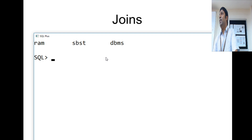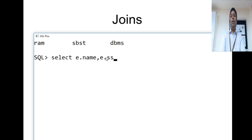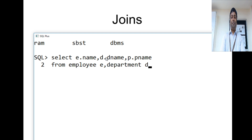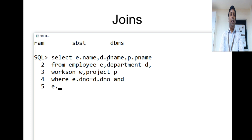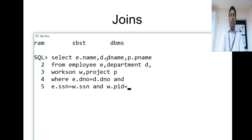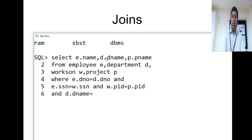Next exercise: display employee name, department name, and project name for all employees who work for the SCSE department only. The SELECT clause is: E.name, D.department_name, P.Pname. Tables used are employee E, department D, works_on W, and project P. Join conditions are E.D_number = D.D_number, E.SSN = W.SSN, W.PID = P.PID, and additionally D.department_name = 'SCSE'.